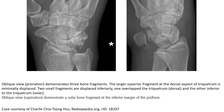Two small fragments are displaced; one overlaps the triquetrum and the other is inferior to the triquetrum overlay. The oblique view demonstrates a volar bone fragment at the inferior margin of the pisiform joint.